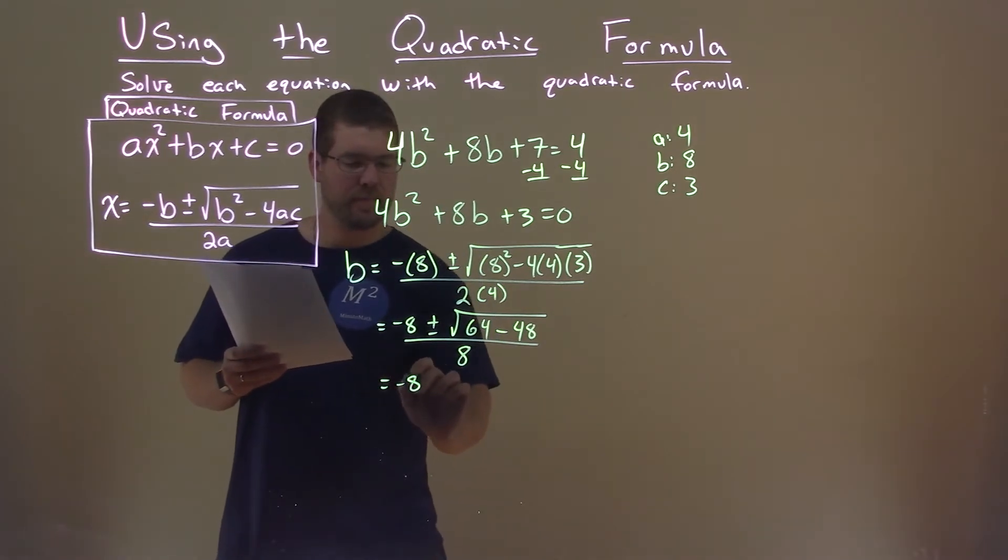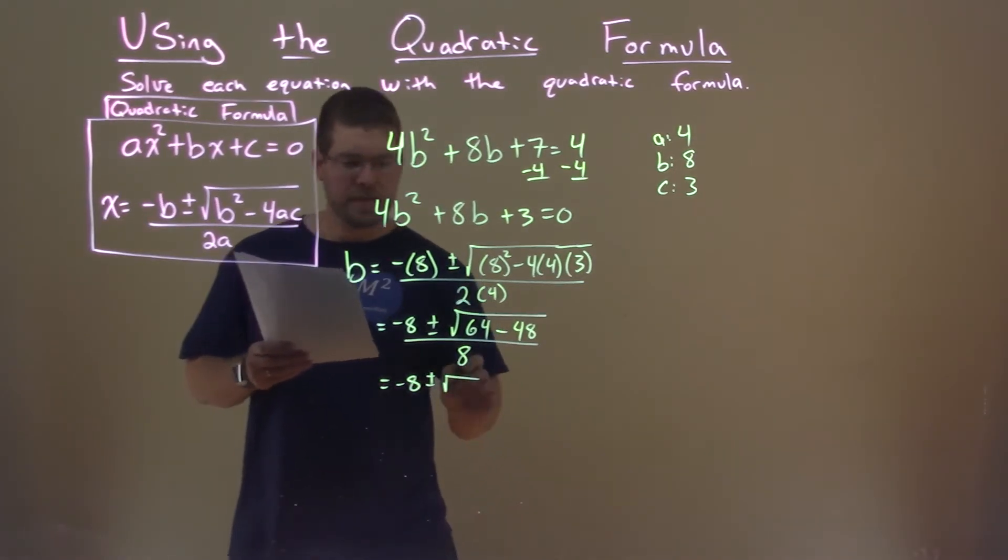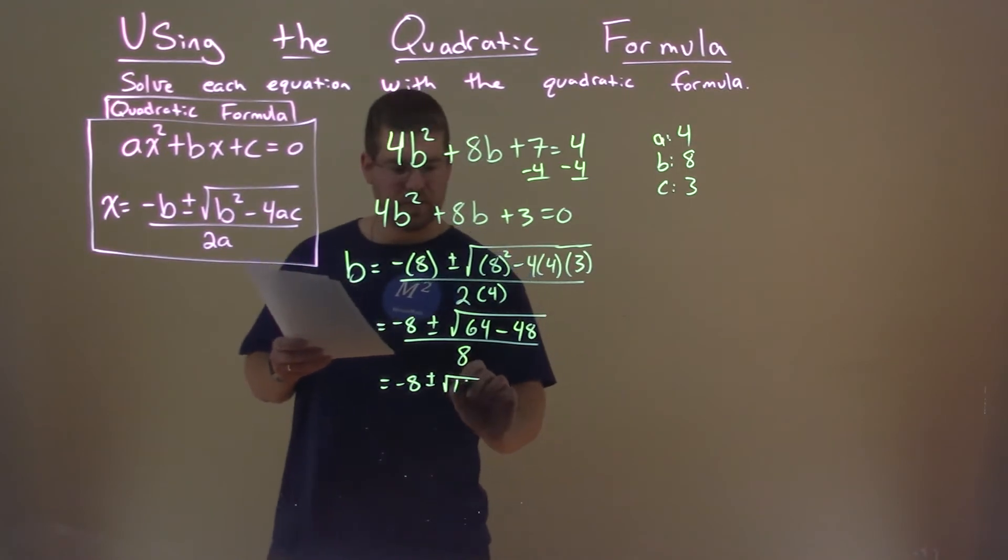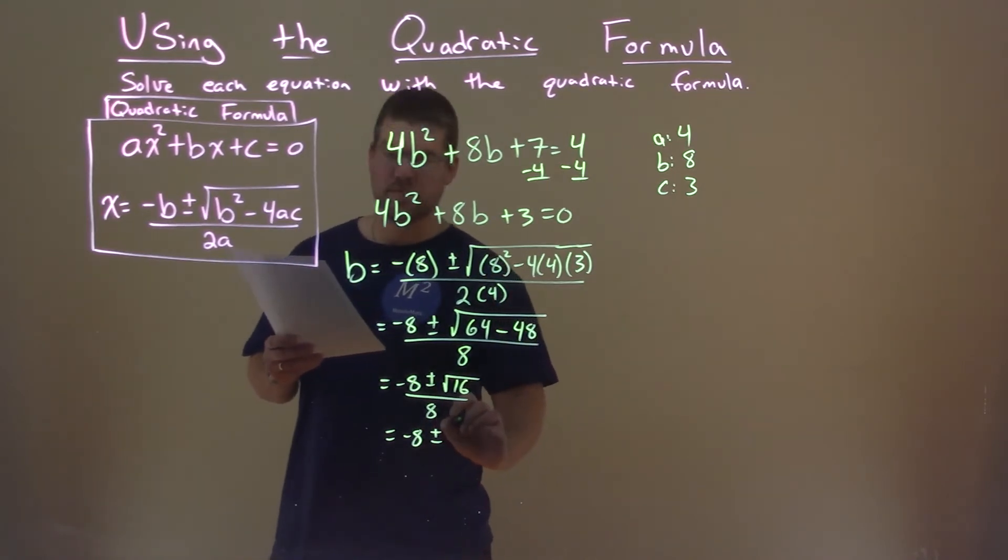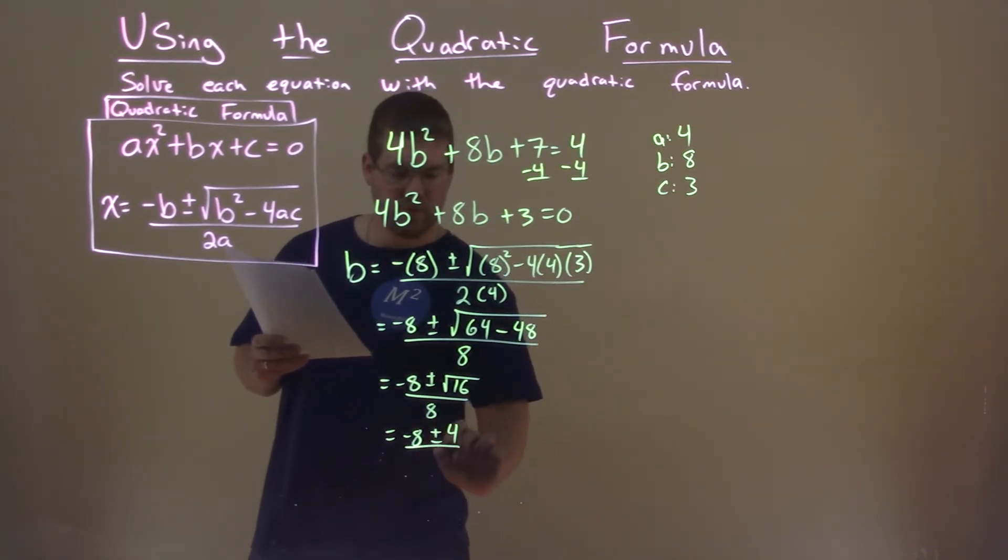Keep simplifying. Negative 8 plus or minus, 64 minus 48 is 16, over 8. Negative 8 plus or minus the square root of 16, which is 4, over 8.